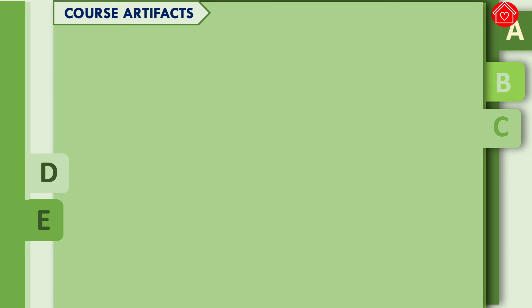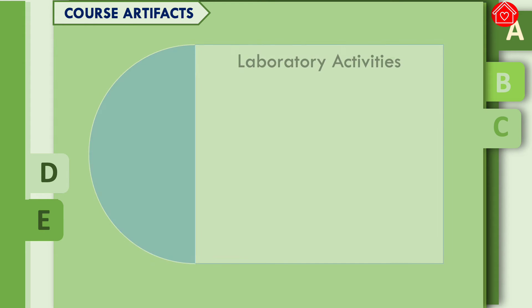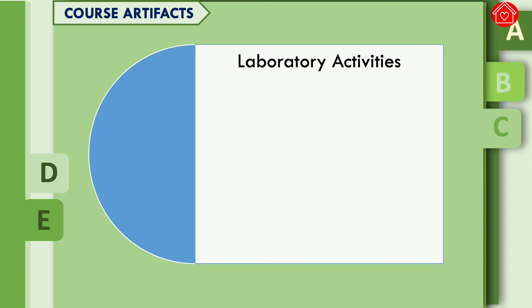The third key component of this course design are the course artifacts. Based on my own understanding, the course artifacts refer to the evidences of learning. For this particular course we will be having different activities in order to assess that there really is learning on the part of our learners. We will be implementing laboratory activities which can be done at home with minimal to no supervision, allowing the learners to self-direct.